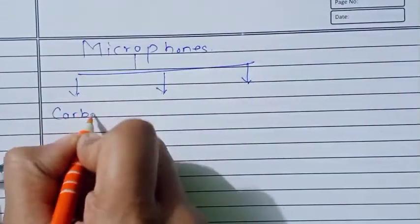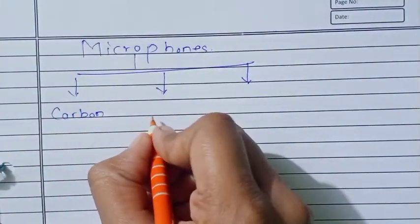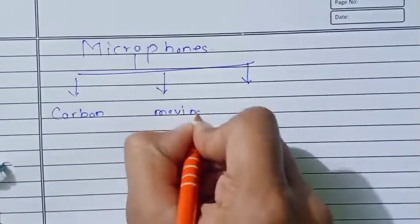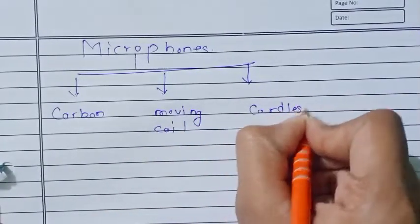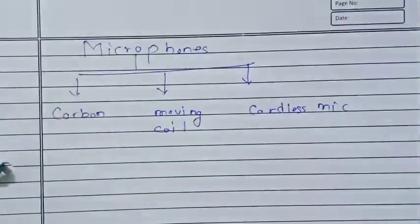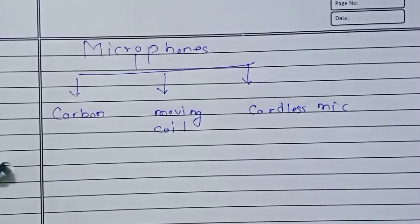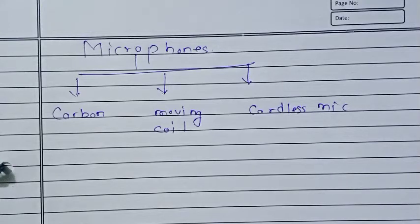The three types are: carbon microphone, moving coil microphone, and cordless microphone. We will also study other important microphones like lavalier microphones, which are very important nowadays. Celebrities and leaders use lavalier microphones on stage because they are very useful.